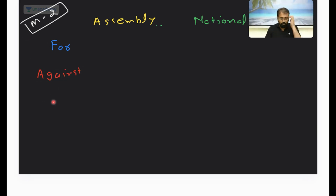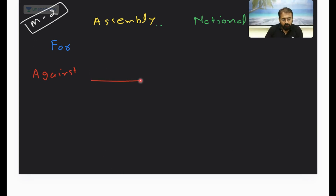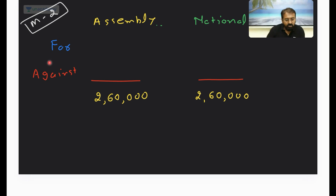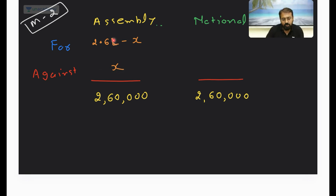Any party receives votes for and votes against. The total votes cast in both elections were 2,60,000. Let's assume in the assembly election the votes against were x, so votes for will be 2,60,000 minus x.